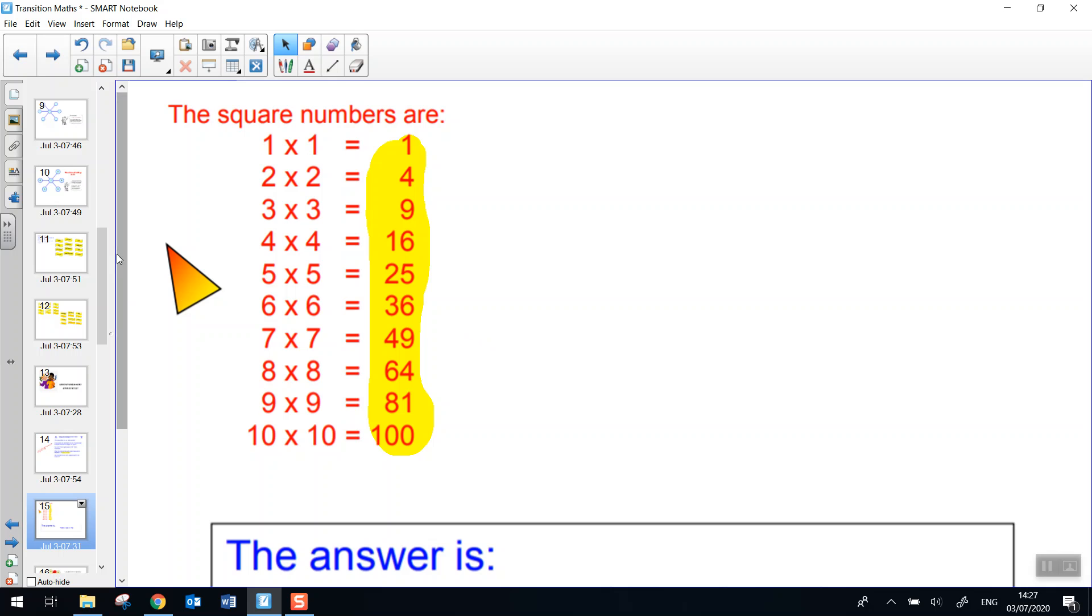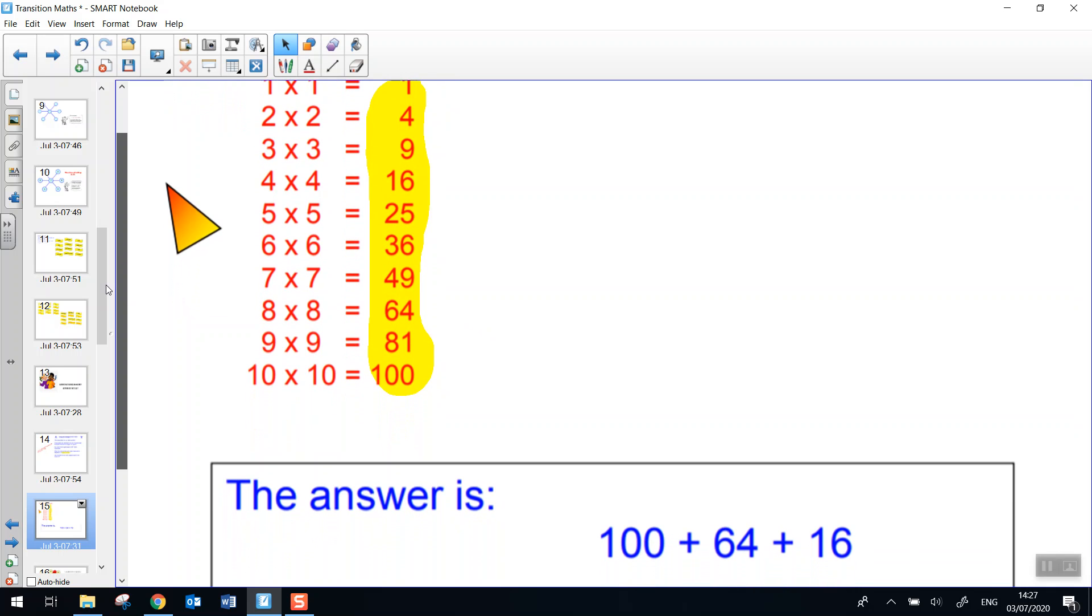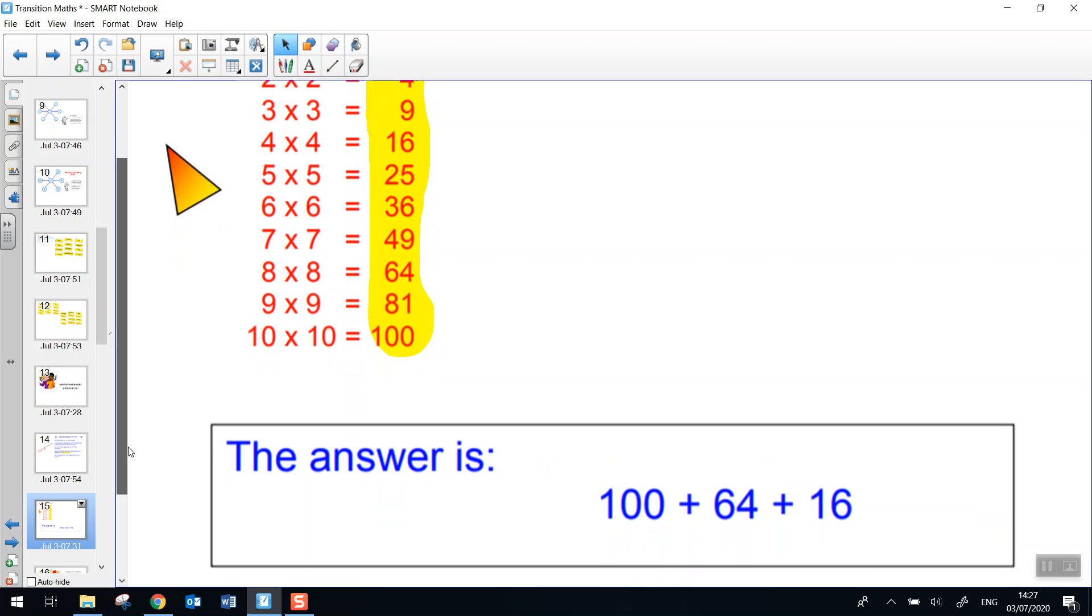Did you find them? Let's have a look. The answer is 16 and 64 add 100 makes 180. Really well done if you got that. That was a little bit tricky that one. Let's look at our next one.